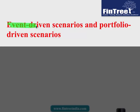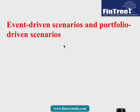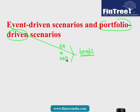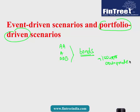The next learning outcome covers event-driven and portfolio-driven scenarios. Let us say you have a portfolio made of AA-rated, A-rated, and BBB-rated bonds. A portfolio-driven scenario would ask: what if one of the issuers in which you have a large holding has a credit rating downgrade — what would be the impact on your portfolio? Or you could consider: what if interest rates in the market increase or decrease, what would be the impact on the portfolio?